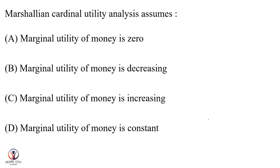If you are talking about Unit One, the cardinal utility is going to measure the initial material — utility can be measurable. The question options regarding marginal utility of money are: zero, decreasing, increasing, or constant.